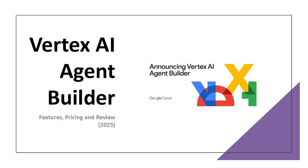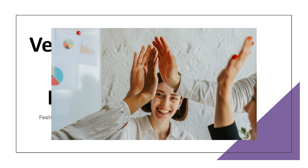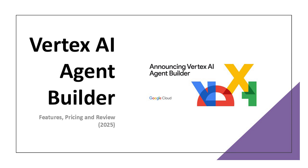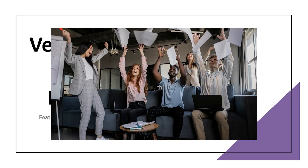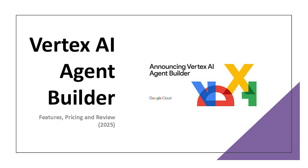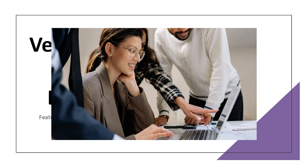Vertex AI Agent Builder stands out in 2025 as one of the most robust platforms for building intelligent, scalable, and integrated AI agents. With a powerful feature set, flexible pricing, and seamless integration into the Google Cloud ecosystem, it's ideal for businesses ready to invest in AI transformation. While it's not perfect — especially if you're new or outside the GCP world — it offers a solid foundation for building the next generation of enterprise automation. If you're serious about AI agents, this platform deserves a close look. I hope you found this video helpful. See you guys next time.